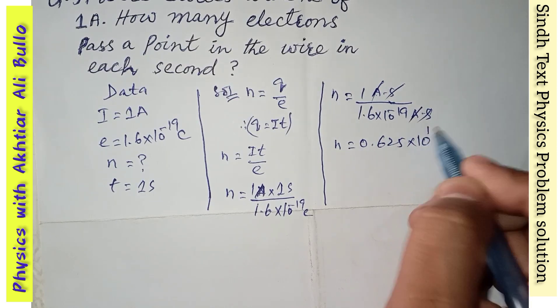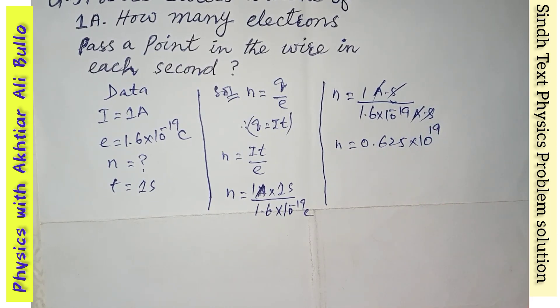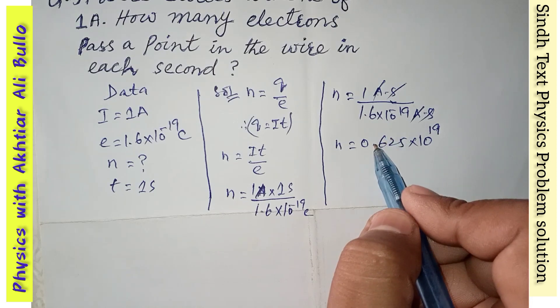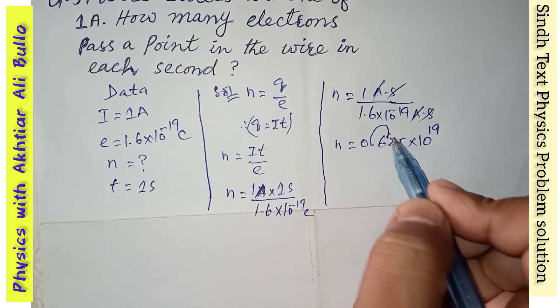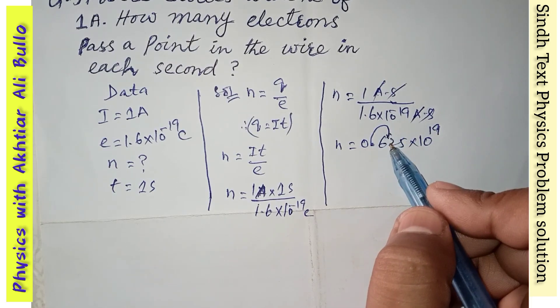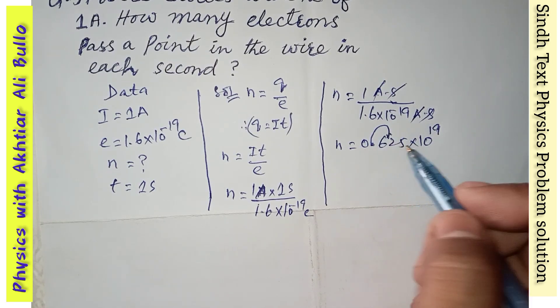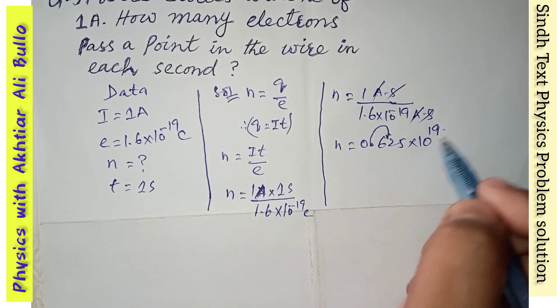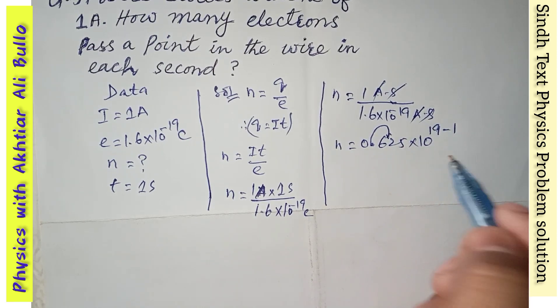it will be plus 19, 10 to the power plus 19. So when we will shift this decimal, when we will shift the decimal up to one digit, then we will subtract 1 from 19